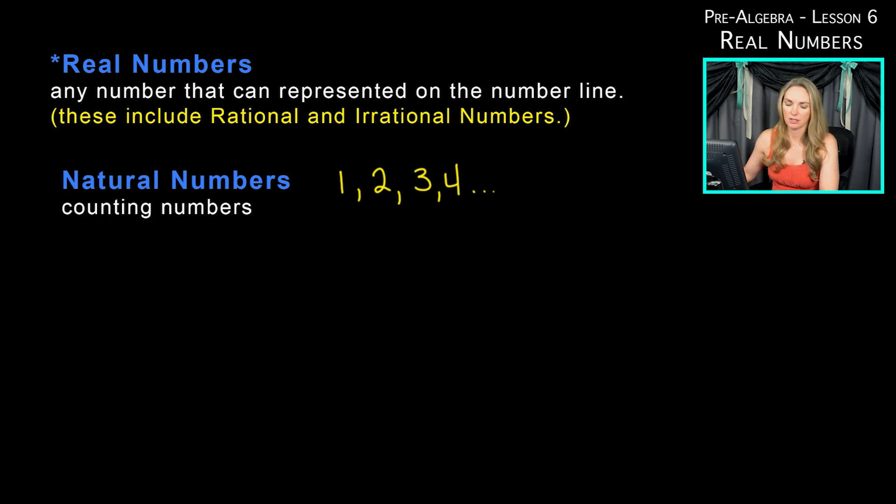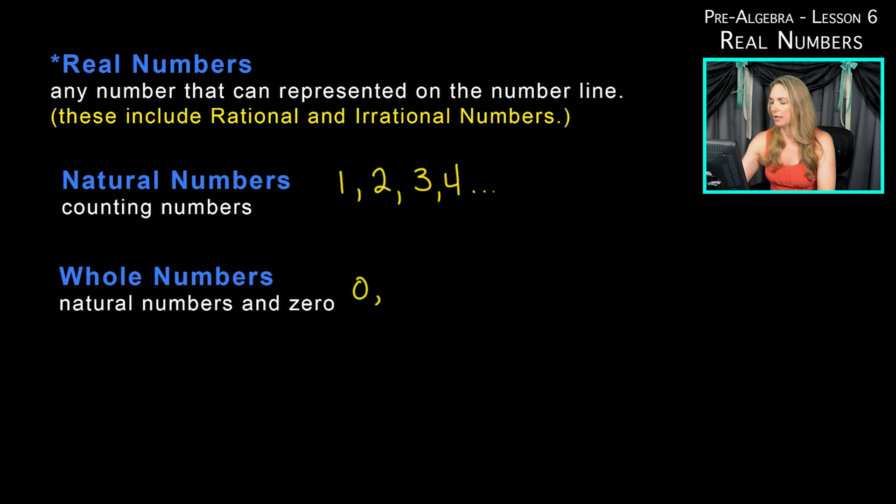The next category is whole numbers. Whole numbers are natural numbers and zero. So now we start at zero and we have one, two, three, and so on. Natural numbers are what you learned when you first learned how to count starting with one. Then for whole numbers, once you started doing math problems, you also added in the zero.